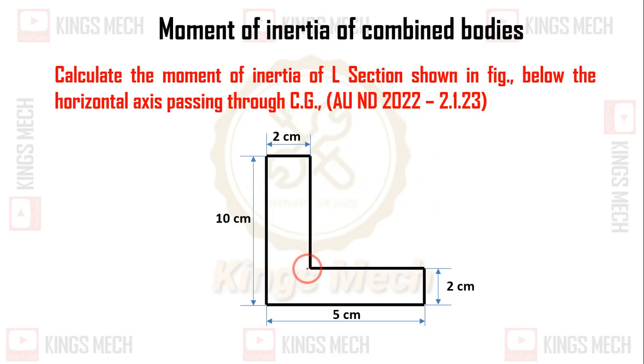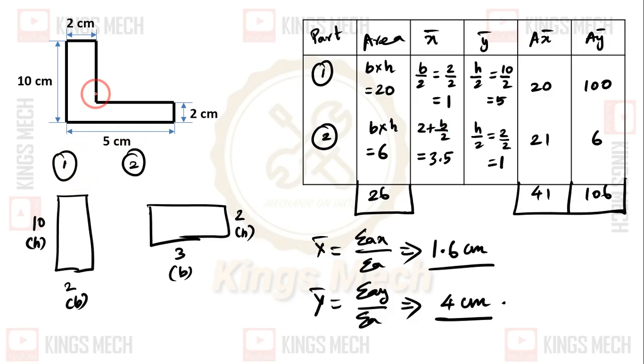This is a very easy problem. The L-block can be split either way, one body or the other. The dimensions given are in centimeters, not millimeters, so the answer must be in centimeter to the power 4. Now we can solve the problem. First, this is section number one and this is section number two. The dimensions are 2 by 10 and 2 by 3.